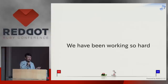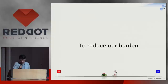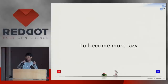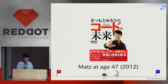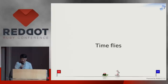Maybe Dave Thomas is a lazy guy — so am I. We have been working so hard over the past 20 years as the Ruby core team, working to reduce our burden in programming and become more lazy. We work so hard to be able to be lazy. 20 years later, at age 47, I wrote a book about the future of code. Unfortunately it's not translated, but time flies — 20 years has passed and the situation has changed.